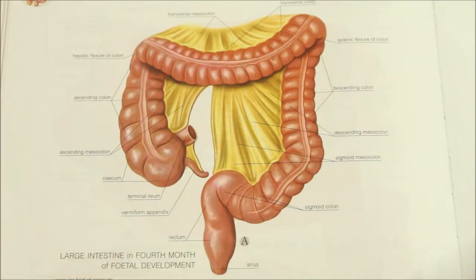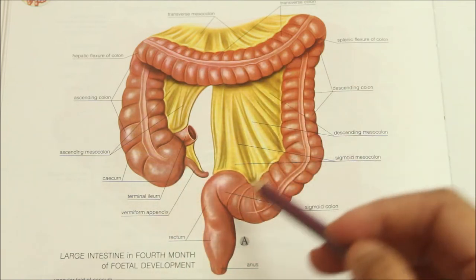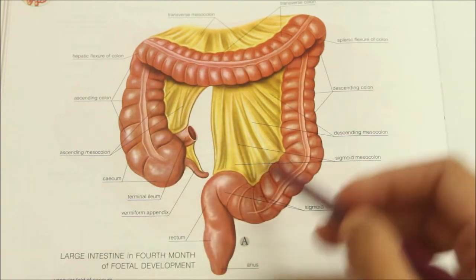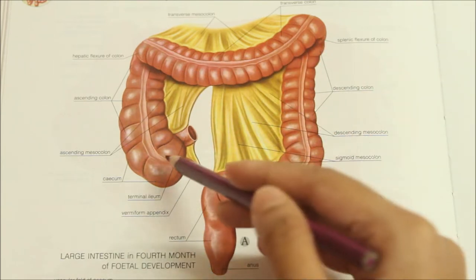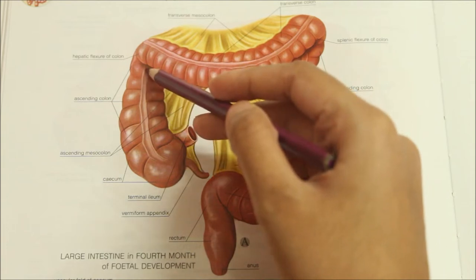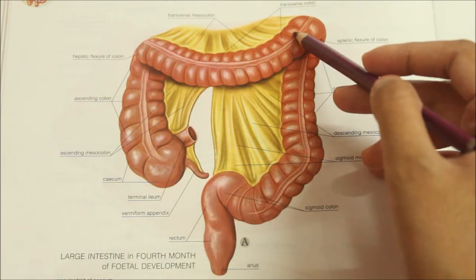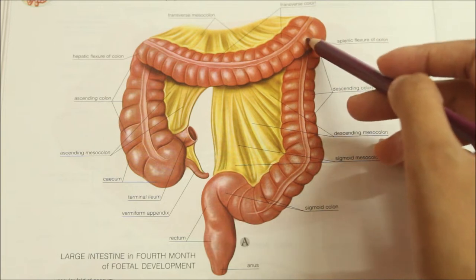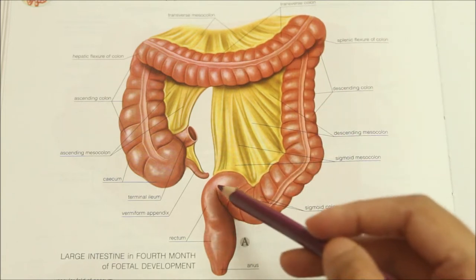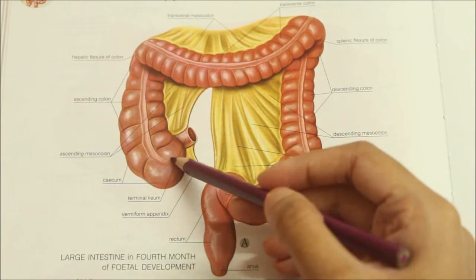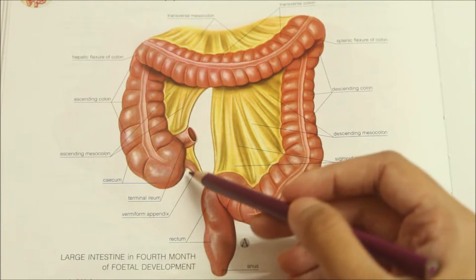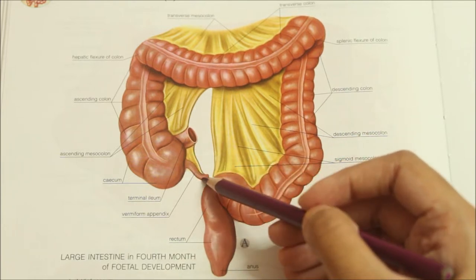Hello friends and welcome back to my channel. In this video we will be learning about the large intestine. To begin with, the large intestine extends from the ileocecal junction to the anus. It is about 1.5 meters long and is divided into cecum, ascending colon, right colic flexure, transverse colon, left colic flexure, descending colon, sigmoid colon, rectum and the anal canal. In the angle between the cecum and the terminal part of the ileum there is a narrow diverticulum called the vermiform appendix.